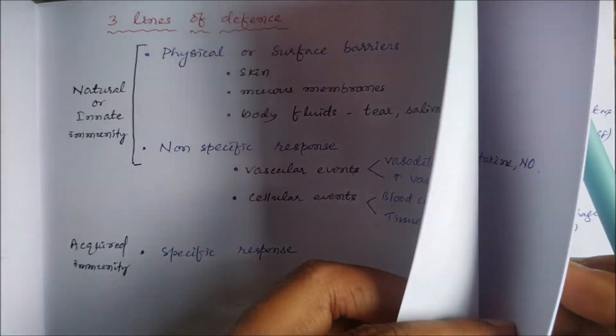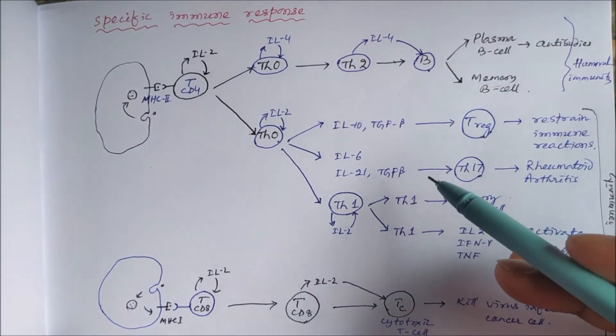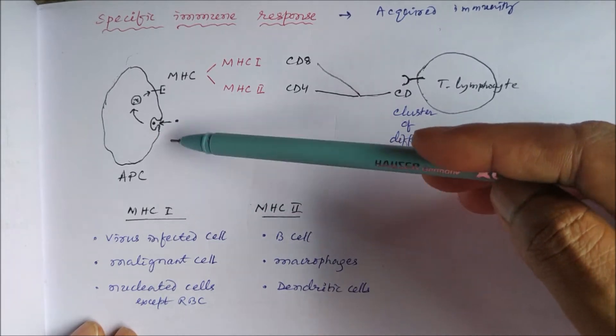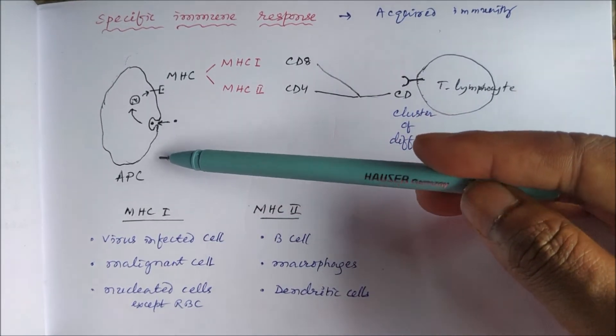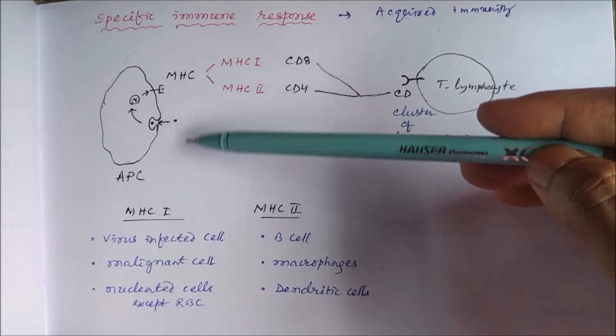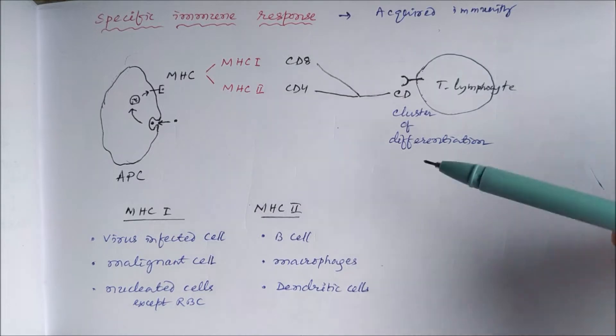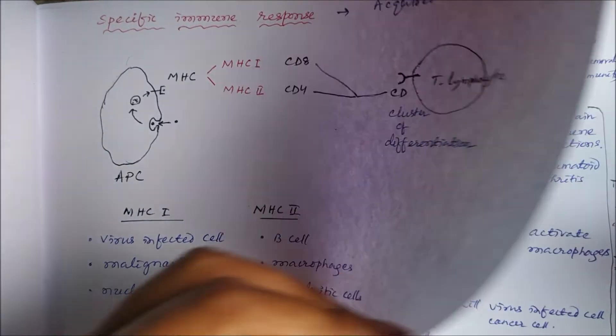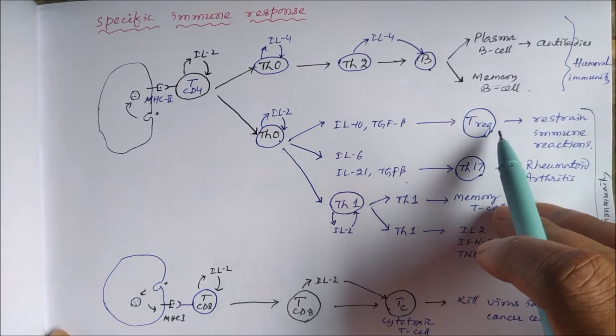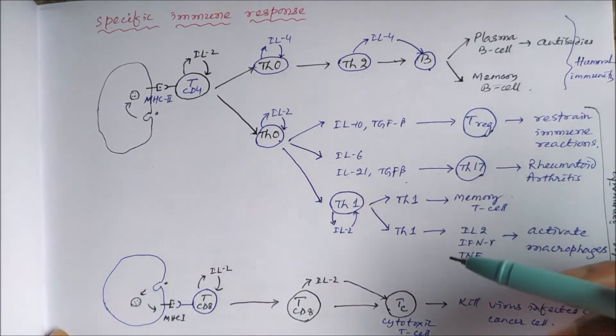In specific immune response, when the antigen infects a cell or enters a cell, the antigen is processed and the cell becomes the antigen presenting cell. It is expressed in the form of major histocompatibility complex. According to whether it is MHC1 or MHC2, the T lymphocyte with specific cluster of differentiation will interact with it. There is involvement of B lymphocytes or T lymphocytes, T helper 1 cells, T helper 17 cells, T regulatory cells, T helper 2 cells, and then cytotoxic T cells.